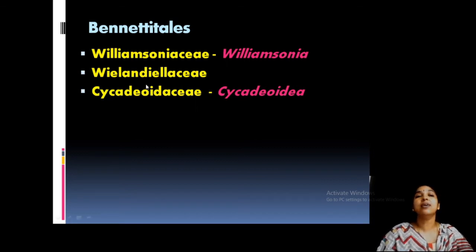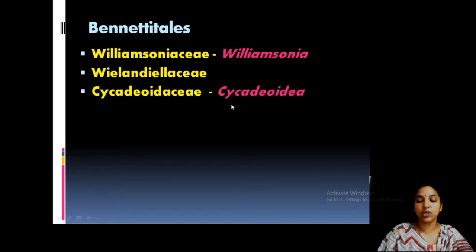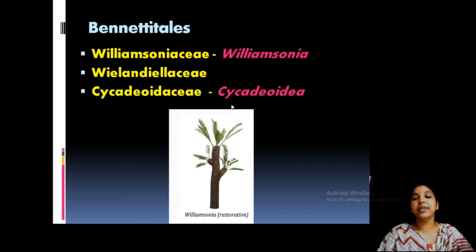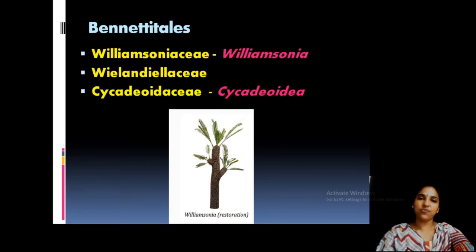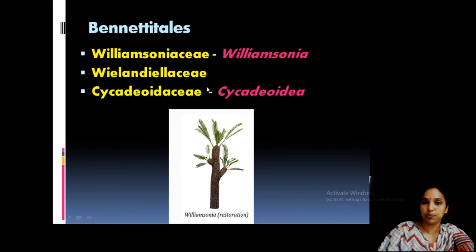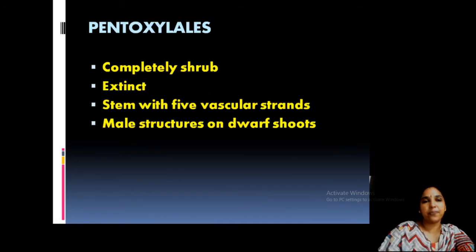Three members of Bennettitales are Williamsonia, Wielandiella, and Cycadeoidea, belonging to families Williamsoniaceae, Wielandiellaceae, and Cycadeoidaceae respectively. Williamsonia is named after the scientist Williamson. Bennettitales have a stout stem and cycas-like leaves, but their peculiar feature is that the flower is angiosperm-like. The member Cycadeoidea is in your syllabus.